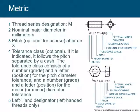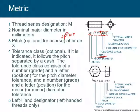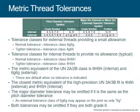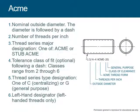For metric, same idea: we put M and then the size — for example M8. The pitch is optional because the standard pitch is already defined in the metric system. The tolerance class in the metric system comes in two letters and two numbers.